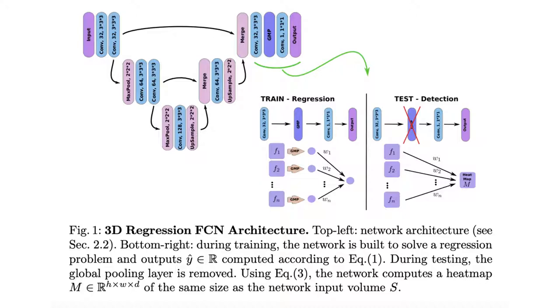When testing on unseen images, we first run the network to estimate the number of lesions. Then, we remove the global pooling layer to compute the localization maps of the size of the input image.